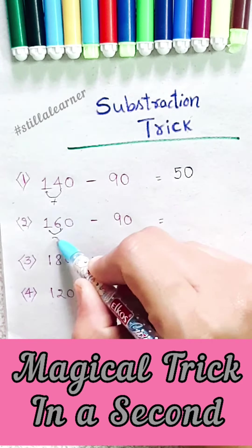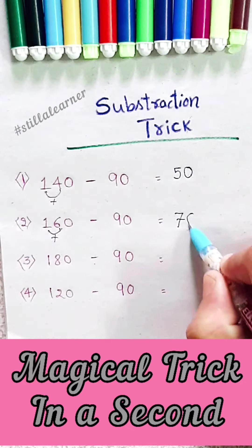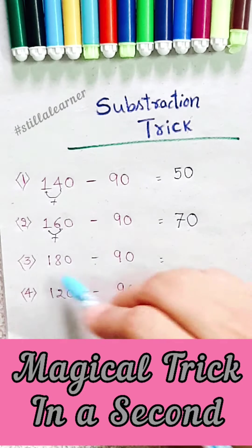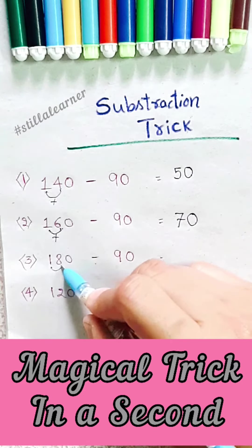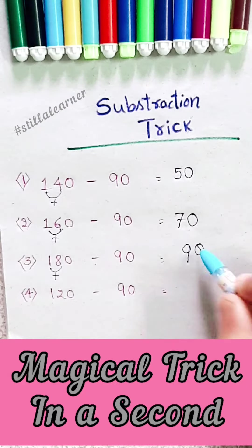Just add 1 plus 6, the result is 7, and after that you put 0. That is 70, your answer. Next, 180 minus 90: 1 plus 8 equals 9, after that 0. 90 is your answer.